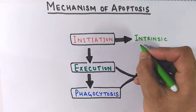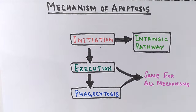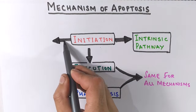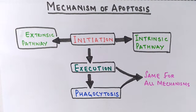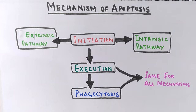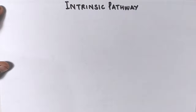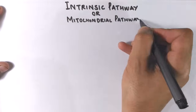We have the intrinsic pathway for apoptosis, in which apoptosis is initiated by intracellular apoptotic signals or signaling molecules. On the other hand, we have the extrinsic pathway for apoptosis, which is initiated by extracellular apoptotic signals or signaling molecules. Now let's first describe the intrinsic pathway, which is sometimes also called the mitochondrial pathway for apoptosis.